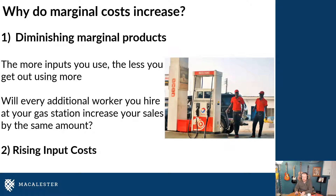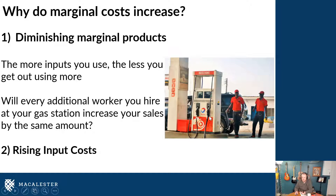This is what's known as diminishing marginal products. The amount of product — gasoline — that I'm able to sell from hiring the first person to fill up cars is going to be higher than the amount I can get from hiring the second person. And I'm paying both of these people the exact same wage. So I'm paying the same wage and getting less out of them, which means my cost per gallon of gasoline is all of a sudden higher. If I wanted to hire a third or fourth person to operate more pumps, each one of them is going to sell less and less gasoline as I continue to hire more people, because they're all going to start getting in each other's way. So my inputs become less productive as I expand my operation when I'm stuck with the same building and infrastructure.